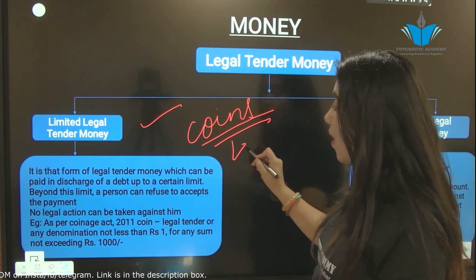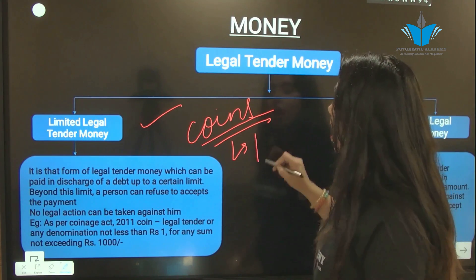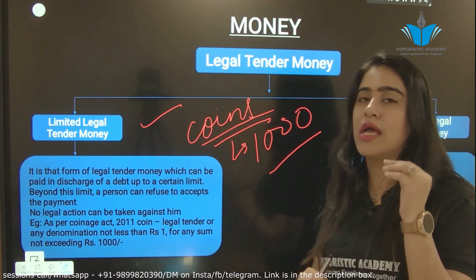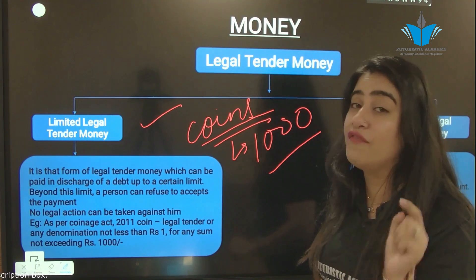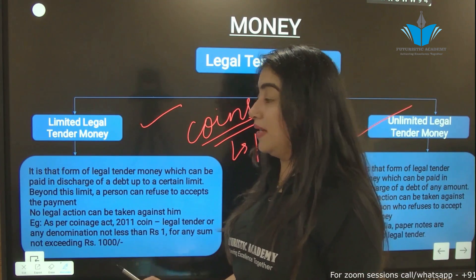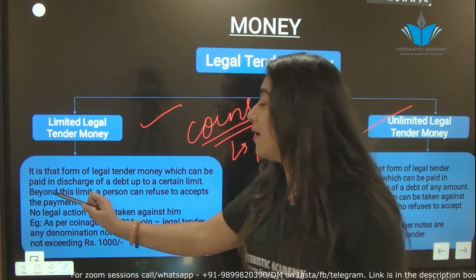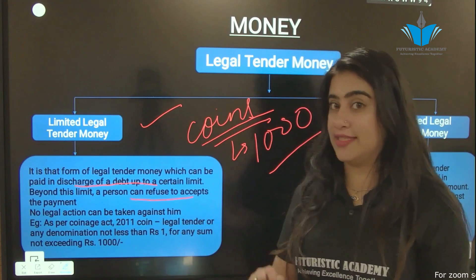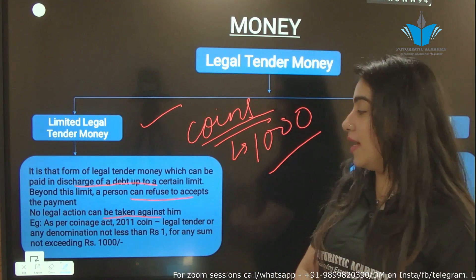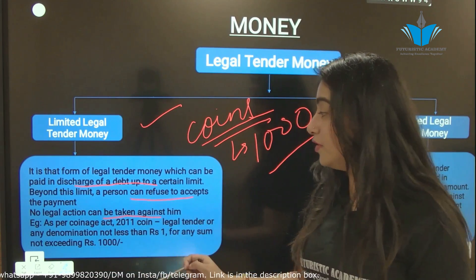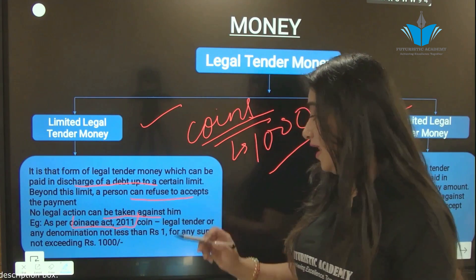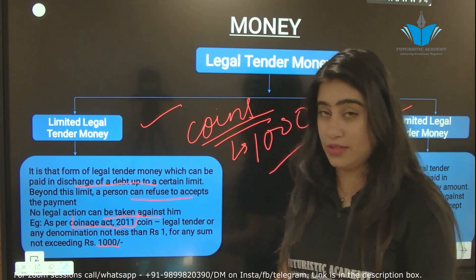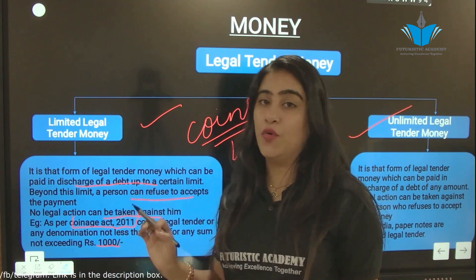Below 1000 rupees you cannot refuse to accept coins, but above 1000 rupees you can refuse and no complaint can be filed against you. So limited legal tender money is that form of legal tender money which can be paid in discharge of a debt only up to a certain limit, and beyond this limit a person can refuse to accept the payment and no legal action can be taken. As per the Coinage Act 2011, a coin is legal tender only for a sum not exceeding 1000 rupees.